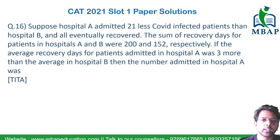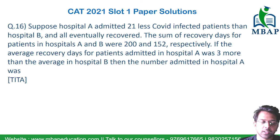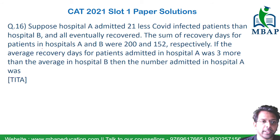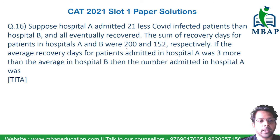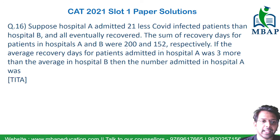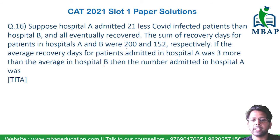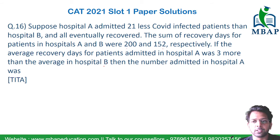The question says: hospital A admitted 21 fewer COVID-infected patients than hospital B, and eventually all recovered. The sum of recovery days for patients in hospital A and B were 200 and 152 respectively. If the average recovery days for patients admitted in A was 3 more than the average recovery days in hospital B — where average recovery day equals total number of days divided by total number of patients — the question asks: what is the number of admissions in hospital A?